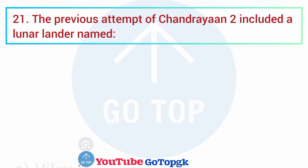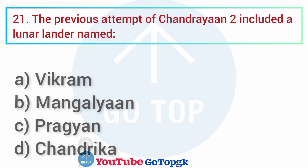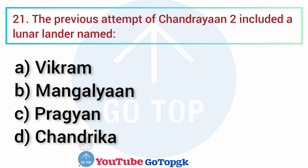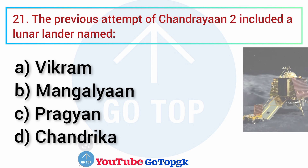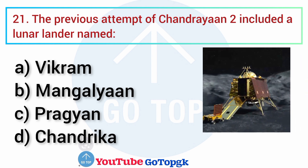Question No. 21. The previous attempt of Chandrayaan-2 included a lunar lander named: Options: A. Vikram, B. Mangalyam, C. Pragyan, D. Chandrika. Your correct answer is option A: Vikram.